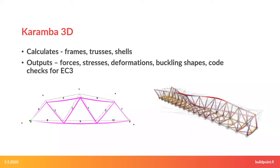Grasshopper can be used not only to generate models for other calculation software — you can also do calculations within Grasshopper itself. Karamba3D is a parametric structural engineering tool which provides accurate analysis of trusses, frames, and shells, available as an add-on for Grasshopper. As output, you can get forces in members and surfaces, stresses, results for buckling checks, and code checks for EC3 for steel members, among other results.